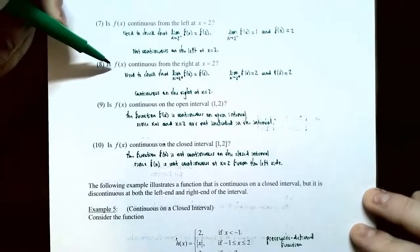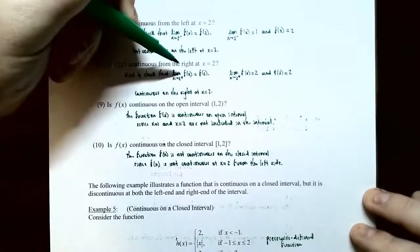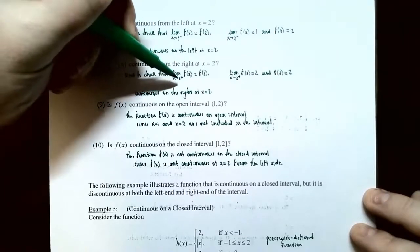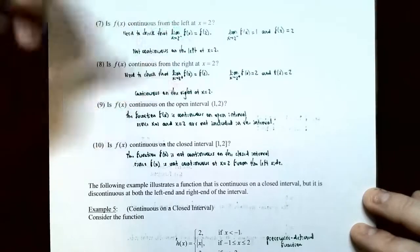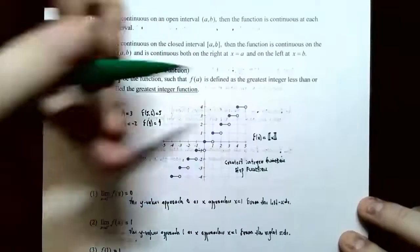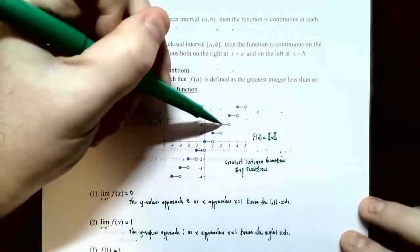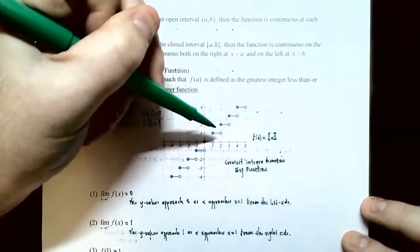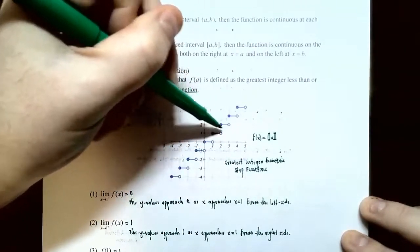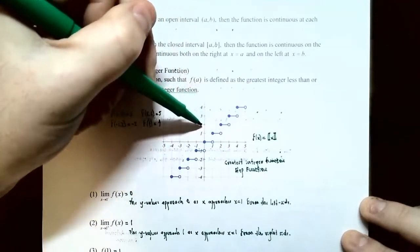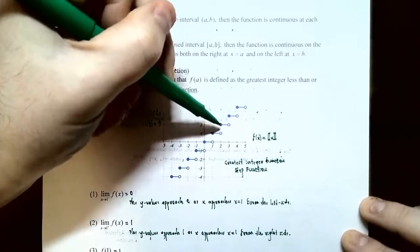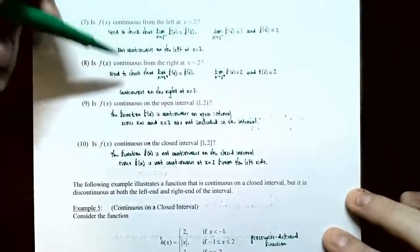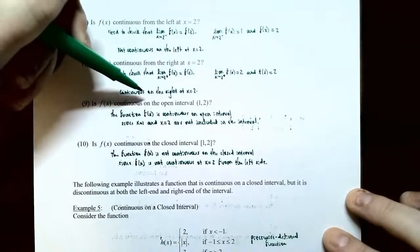Number 8: Is the function continuous on the right at x equals 2? We check whether the limit as x approaches 2 from the right equals f(2). On the right side of x equals 2, the y values are approaching 2, and f(2) is also 2. Since these are equal, the function is continuous on the right side at x equals 2.